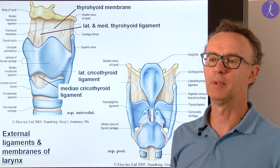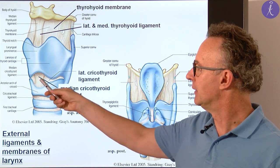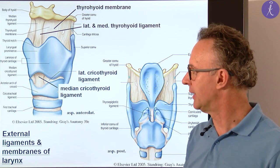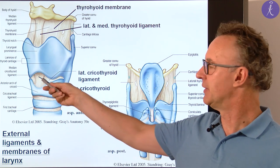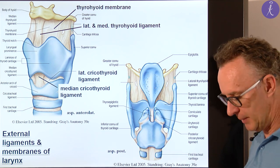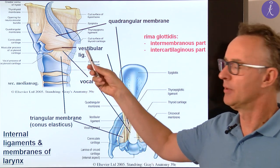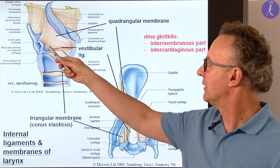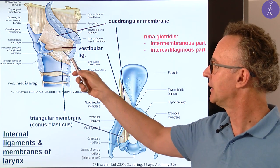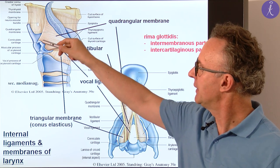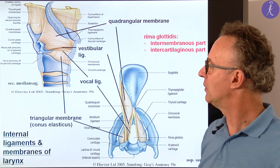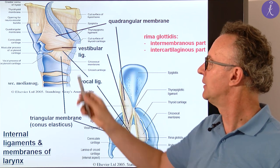In the midline we have the median cricothyroid ligament, or ligamentum conicum in clinical practice. The lateral part is called the lateral cricothyroid ligament. This is where we perform the conicotomy if we have an occlusion in the airways. It is already below the two vocal folds where the airways are again wider, so we are able to provide free airways with this incision if necessary. In the posterior view you see the same elements. We also have inner elastic membranes: a quadrangular membrane in the upper part, and the triangular membrane or conus elasticus in the lower part. The upper margin of the quadrangular membrane will be included in the laryngeal inlet in the aryepiglottic fold.